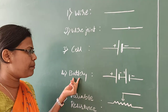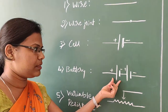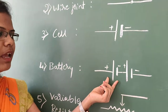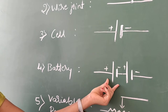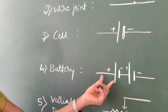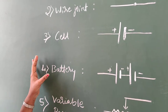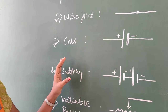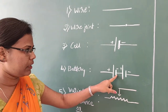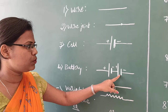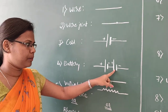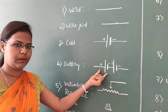Next is the battery. A battery is a combination of two or more cells connected to each other in series. To form a battery, the negative terminal of the first cell is connected to the positive terminal of the second cell. This is the symbol for a battery.